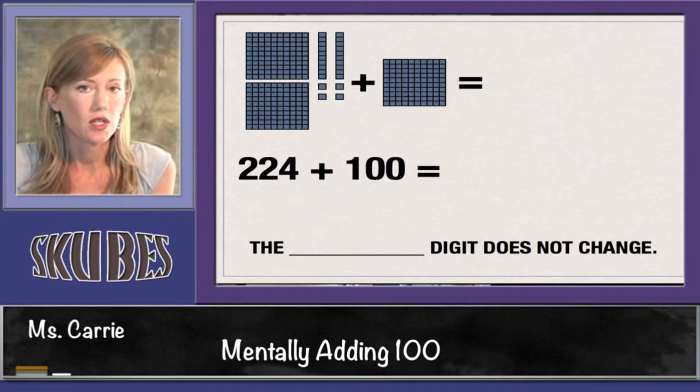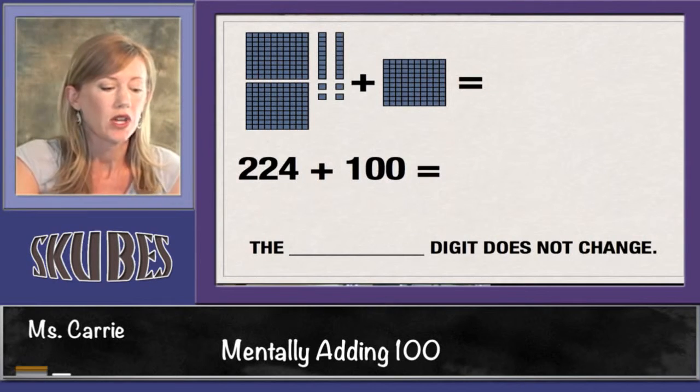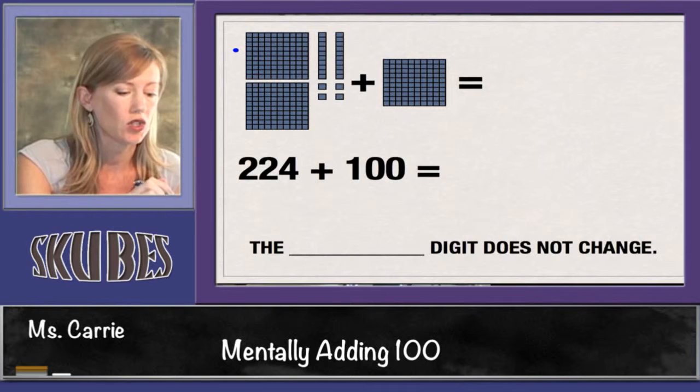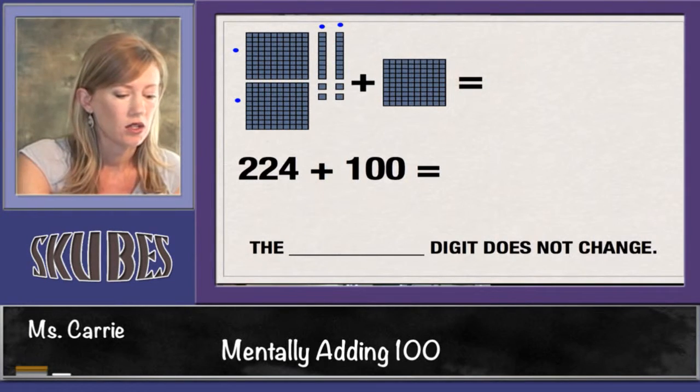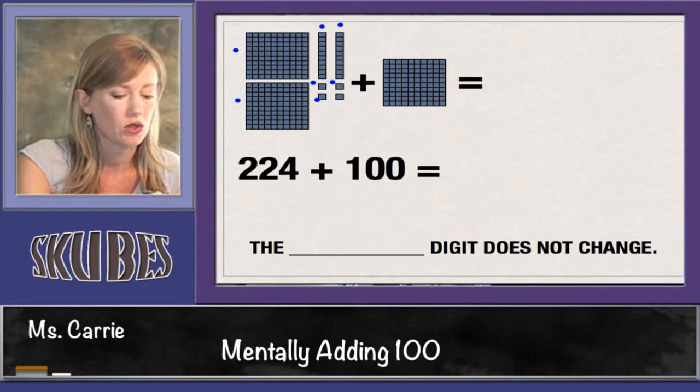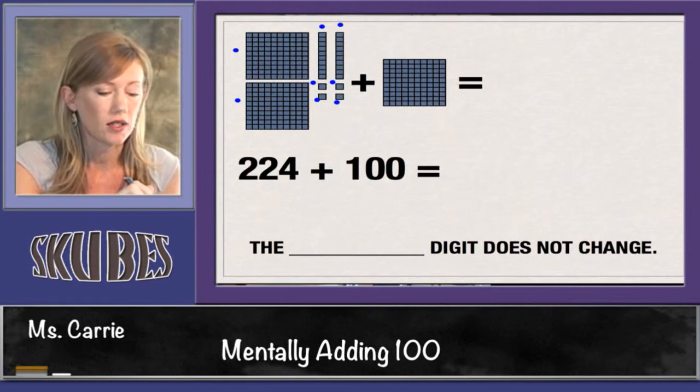So let's look at some pictures and some numbers before we try it on our own. If you look at the picture at the top, you see 100, 200, 210, 220, 221, 222, 223, 224 in hundreds, tens, and ones blocks.